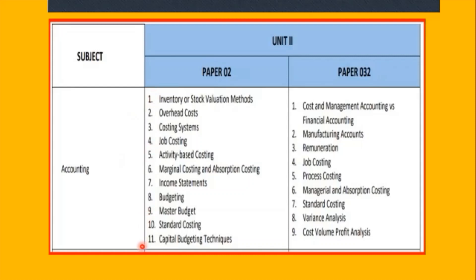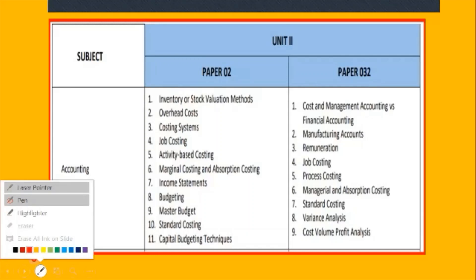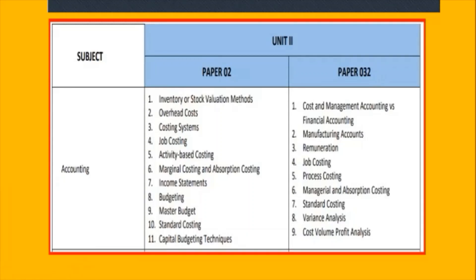We want to look at these topics here. We'll go through them one by one and see what the syllabus says about each. The first topics, numbers one and two, would be module one. You could expect a question on module one with two parts: one for overhead costs and one for inventory stock valuation.